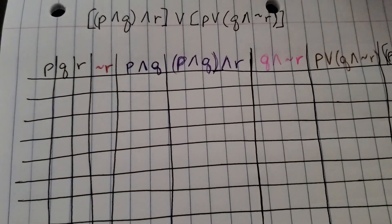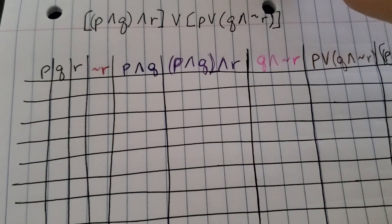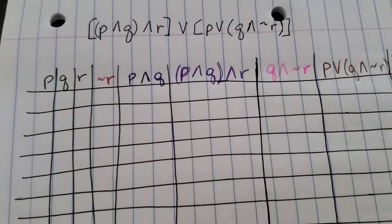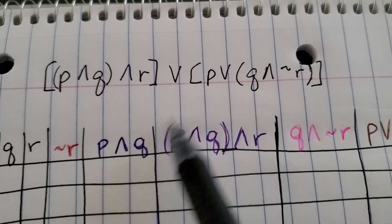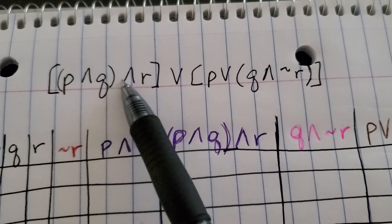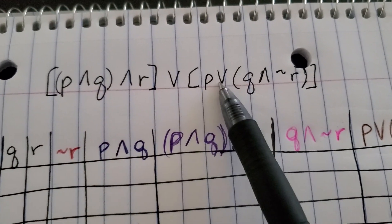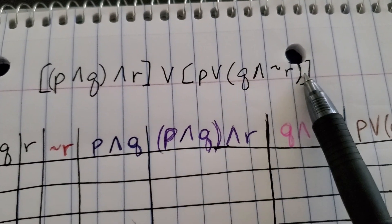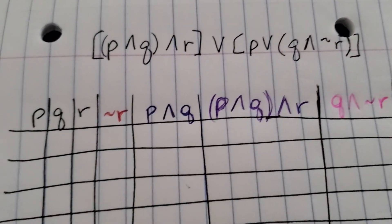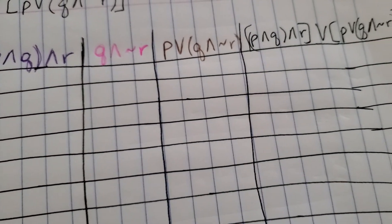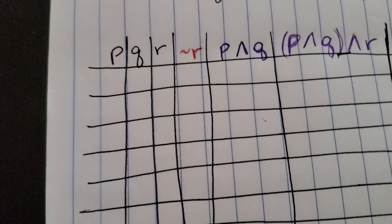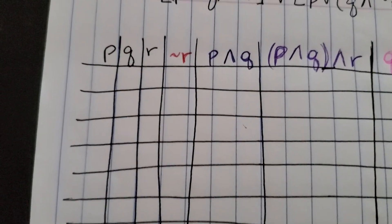This video is another example of how to do a truth table with P, Q, and R using more statements. Here we have our statement at the top: P and Q and R, or P or Q and not R. I'm going to go ahead and start at the very beginning so you can see how this is going to work.